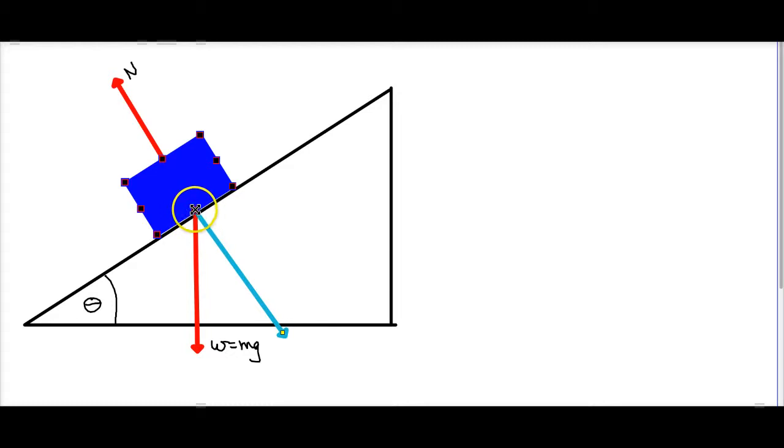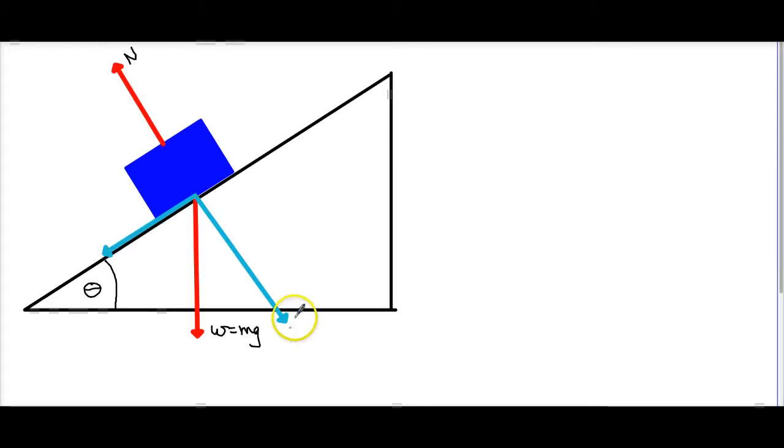And then we've got another component that we can draw in. There we go. And if we can get it to go something like this, where now this is the y component of my weight, and this is the x component of my weight.